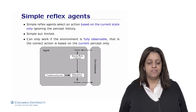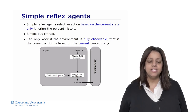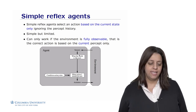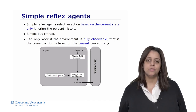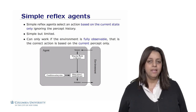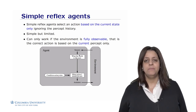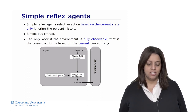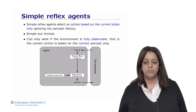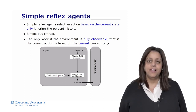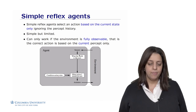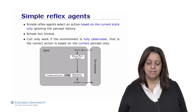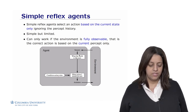What are simple reflex agents? These are agents that select an action based on the current state, ignoring all of the percept history. It's simple but of course limited, because it can only work if the environment is fully observable — that is, the correct action is based on the current percept only. Simple reflex agents are illustrated with a diagram using a condition-action rule that maps each percept to the action it should perform.